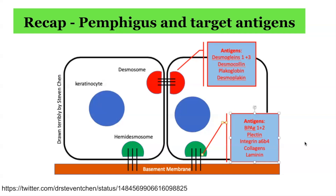Within the hemidesmosomes, there are other targets such as BPAG1, BPAG2, Plakoglobin, Integrin, Collagen 7, and Laminin — and those are the targets often seen in sub-epidermal bullous disorders.